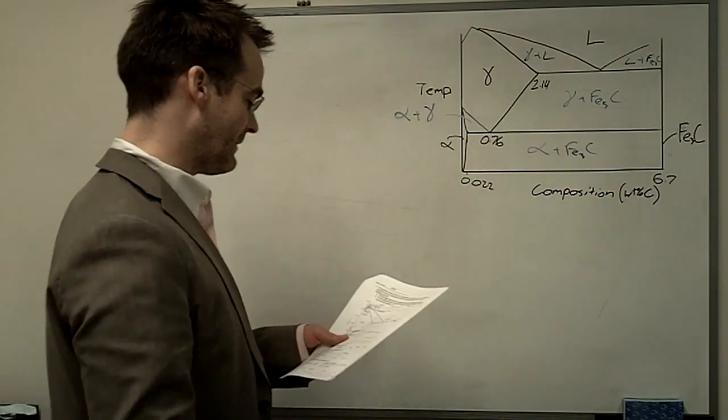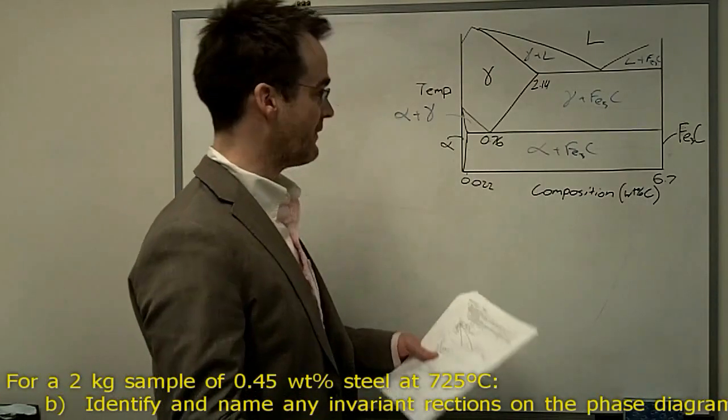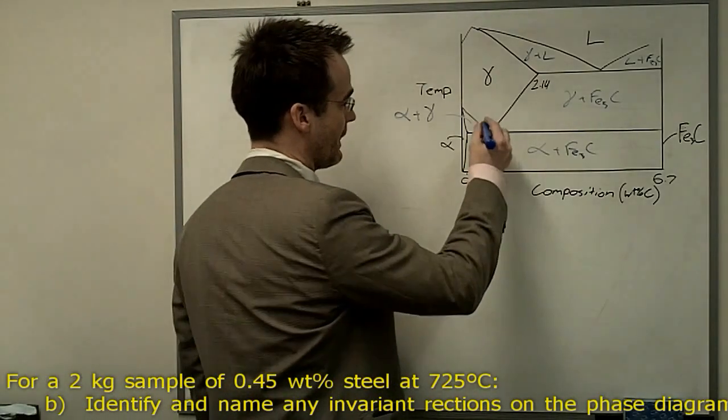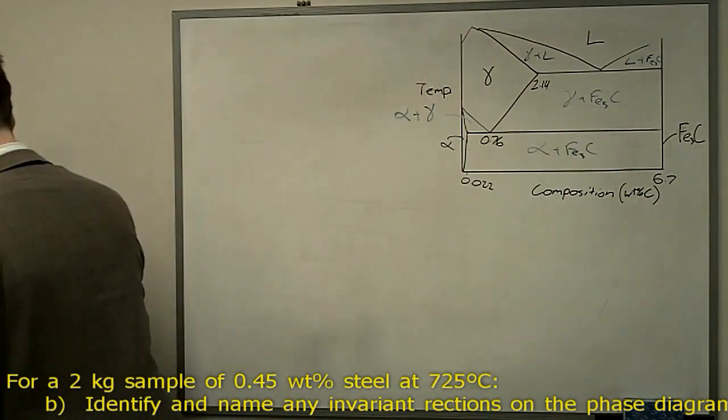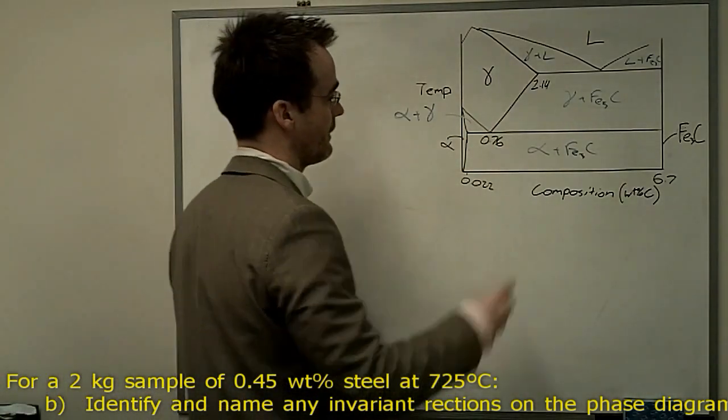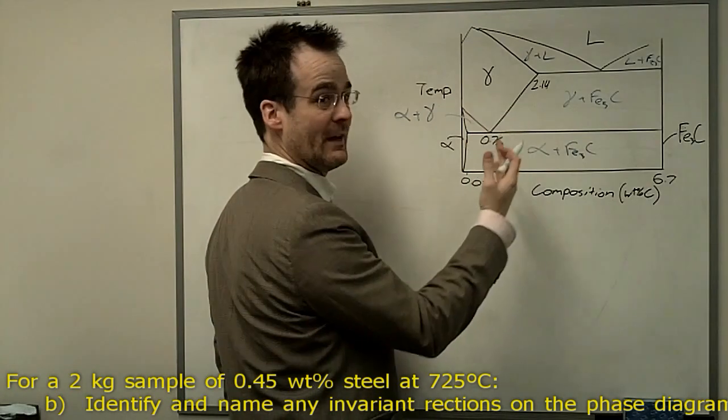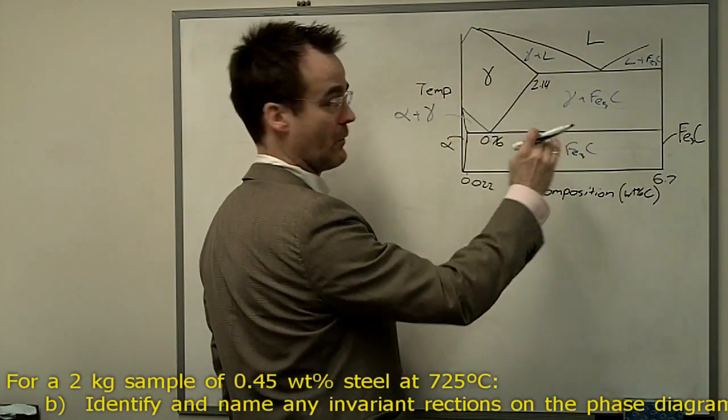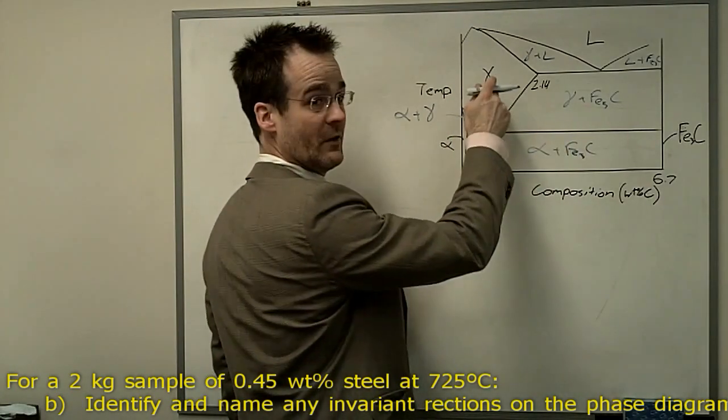Then, OK, part B says, identify and name any invariant reactions. So that's good. We know we've got, right here, looks like a eutectic, V on top of a horizontal line like that, except this is a solid phase going to two other solid phases.